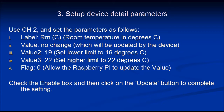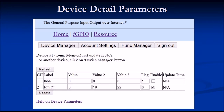The flag setting of zero allows the Raspberry Pi to update the temperature value. Check the enable box and click Update to complete those settings. The value column will show zeros, which simply means the Raspberry Pi has not yet updated the values, since we haven't built the monitor yet.